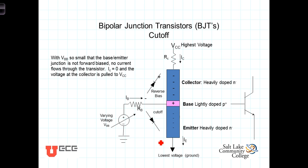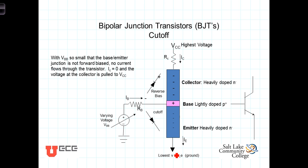To understand how transistors operate, consider this NPN transistor circuit. The base is connected to a variable DC voltage source through a resistor R_B. We define the current I_B as the current flowing into the base. The collector is connected through a collector resistor R_C to a positive voltage VCC, and the current I_C is referenced at the collector. The emitter is tied to ground, the lowest voltage in this circuit, and we reference the current I_E as the current leaving the emitter.